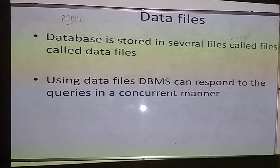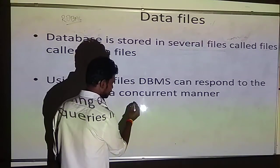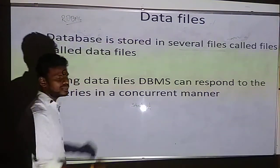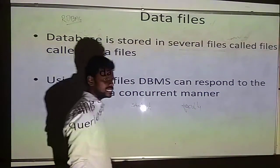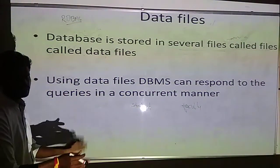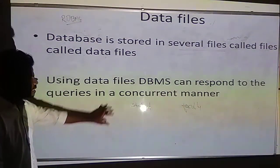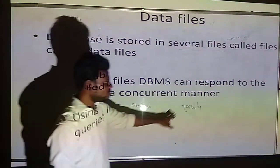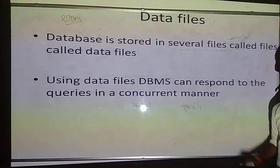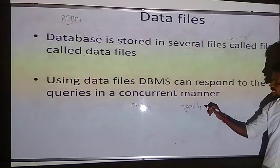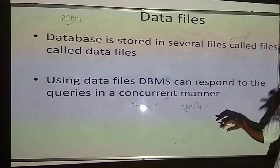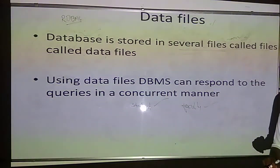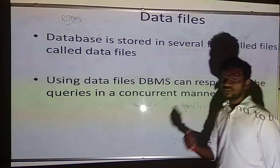Using data files, the DBMS can respond to queries in a concurrent manner. Consider I am working on a student database and a faculty database — these are not two databases, but two tables stored in your university database. Student will become one data file and faculty will become another data file. If a faculty is accessing the faculty details, it is allowed. If a student is accessing student details, it is also allowed, because they are accessing different data files in your database.